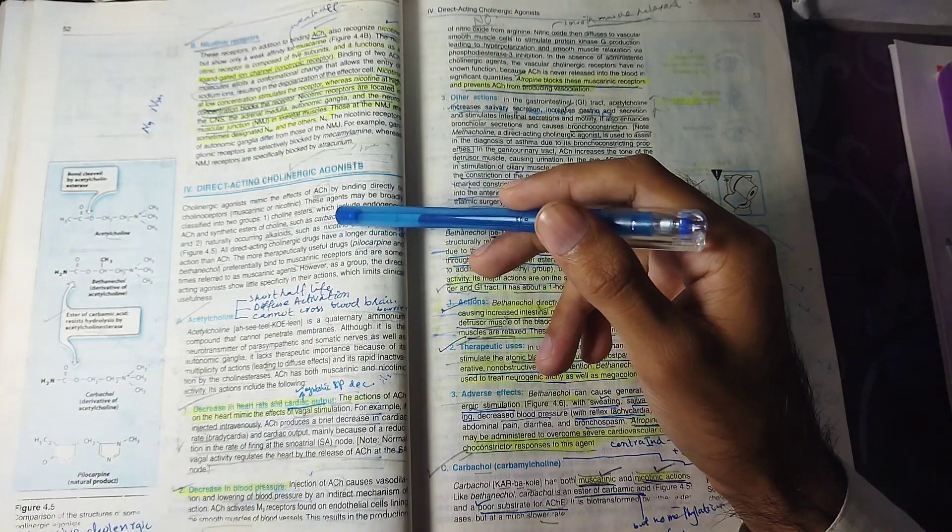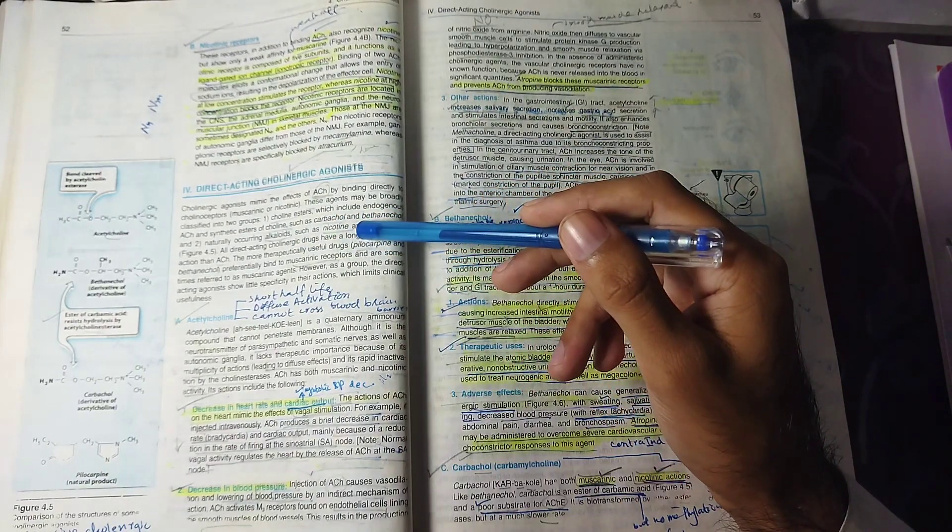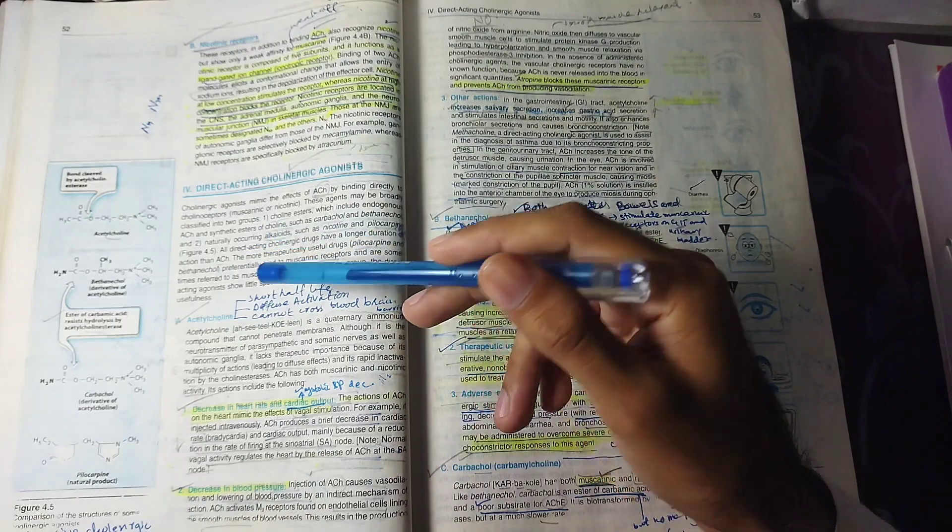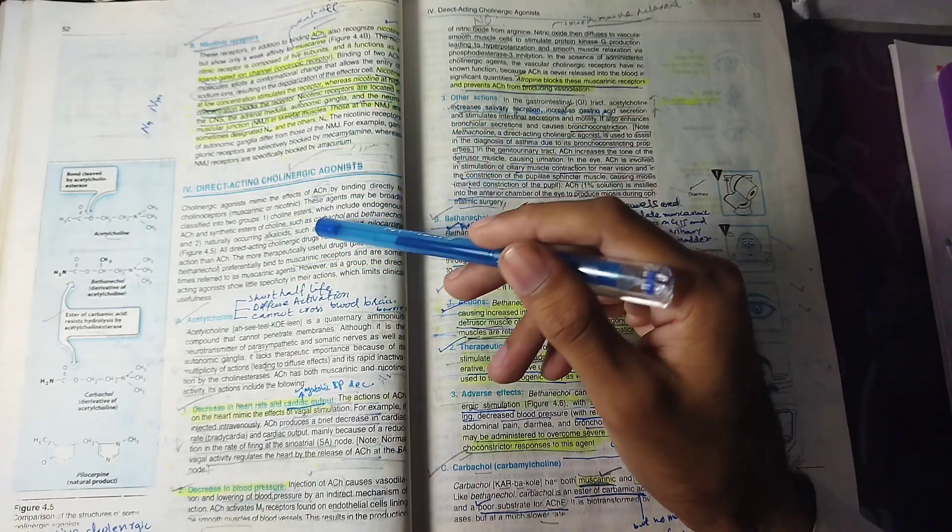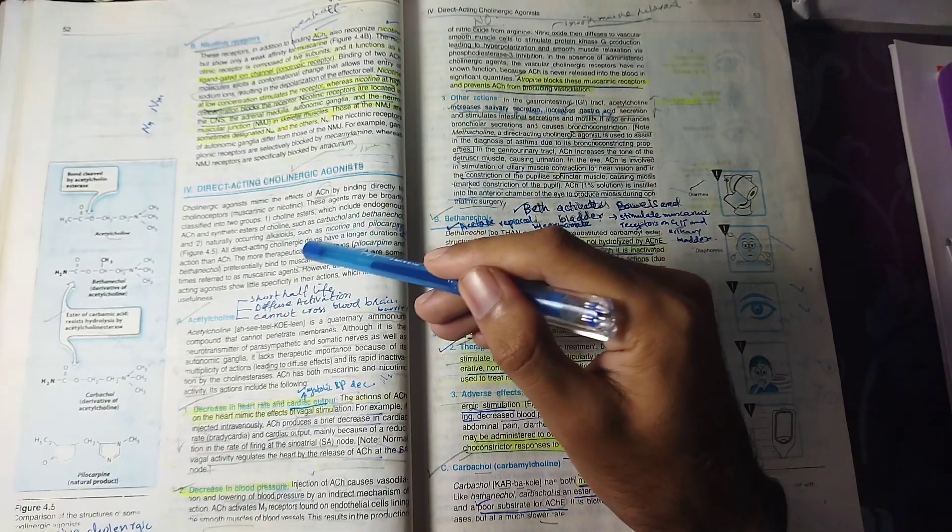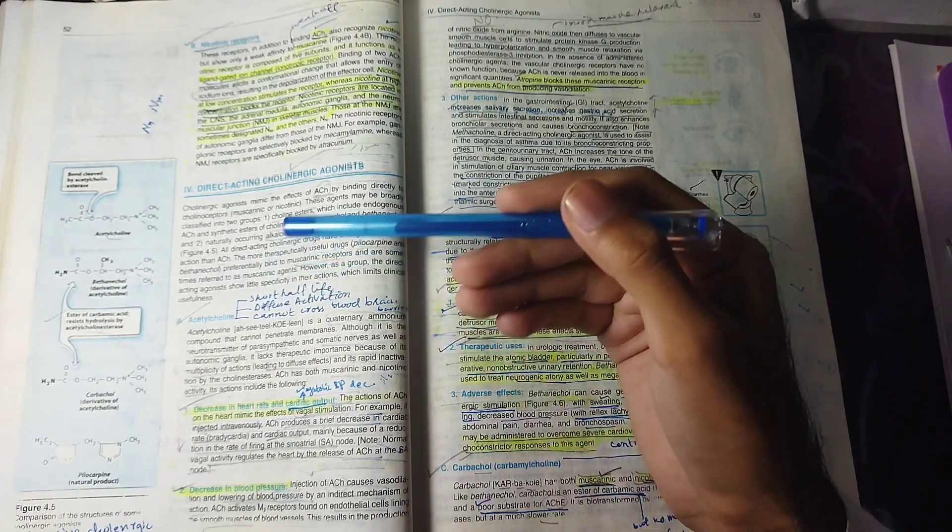We have some drugs, such as pilocarpine and bethanechol, that preferentially bind with muscarinic receptors. They bind the muscarinic receptor predominantly, so we call them muscarinic agents.